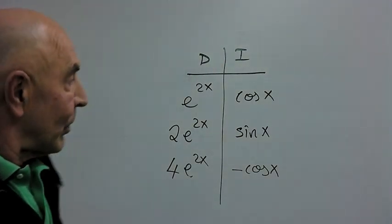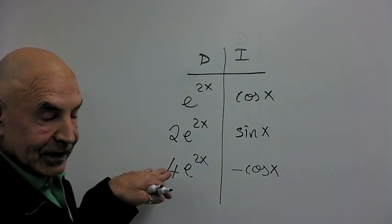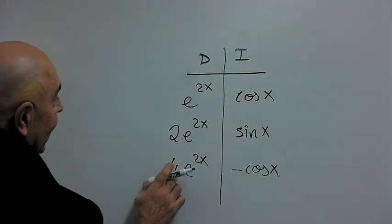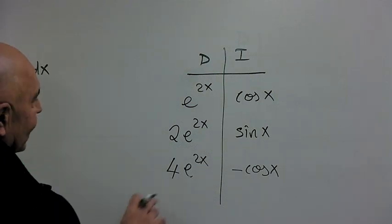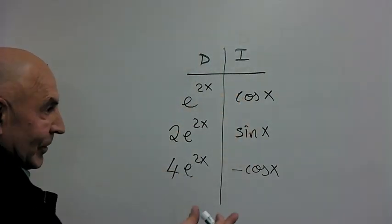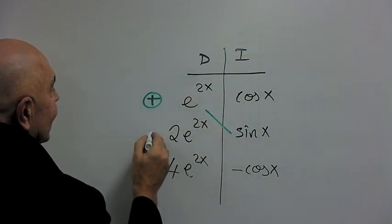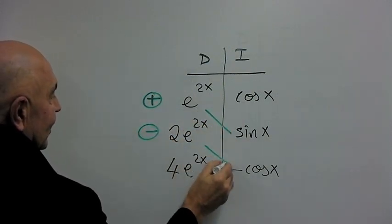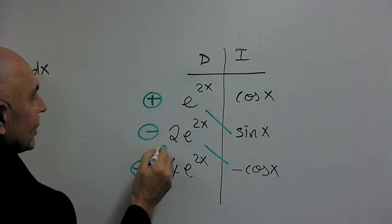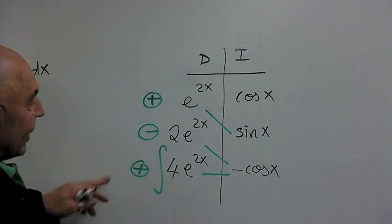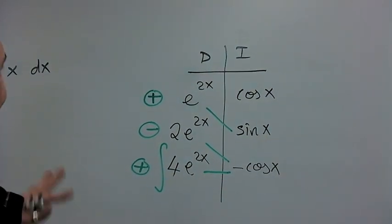But it turns out that this minus sign actually saves our day because if we stop right here, and remember if you stop before you get 0, when you don't get 0, you have to integrate the result that's in the bottom row. There's a product here that you end up integrating. It'll turn out that this is the same as that and something nice is going to happen. So, I'll leave you in suspense and we'll set it up as usual.